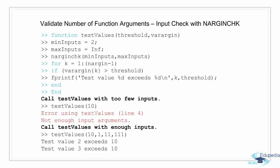Apart from the automatic validation that MATLAB supports, we have narginchk that allows us to validate the number of input arguments. Here I have created a function TestValues that requires at least two inputs. The first input is a threshold value to compare against the other inputs. The program takes the first input as a threshold, compares the subsequent inputs with this value, checks if the test value exceeds the threshold, and prints it. So at least two inputs are required. We define in narginchk that the minimum input required is two and the maximum is infinite. When we call this function with too few inputs — here we called it with a single input argument — we get an error as not enough input arguments are provided. Hence our narginchk returns saying too few arguments.